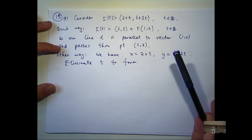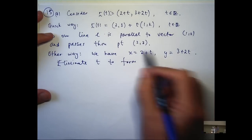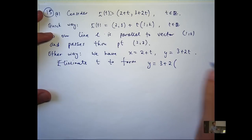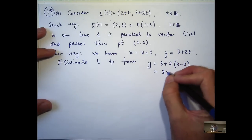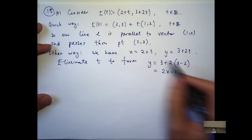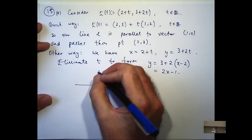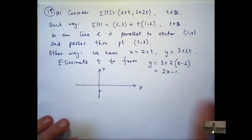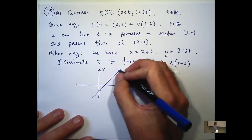Okay, so just making t the subject here and substituting in, we get y equals 3 plus 2(x minus 2), so then cleaning that up we get y equals 2x minus 1. So of course we can draw it now very easily — it's going to pass through minus 1 on the y-axis, and it's going to have a slope of 2.